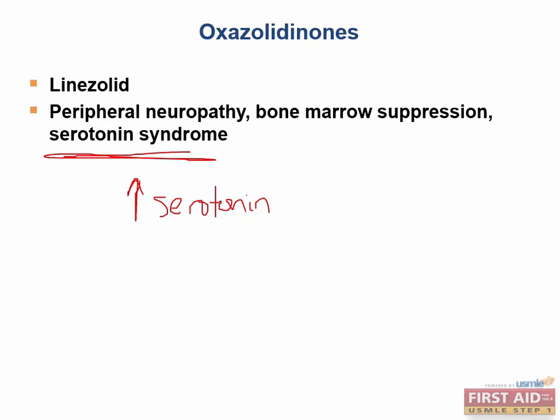Thinking back to biochemistry, the amino acid that is the precursor for serotonin is tryptophan.